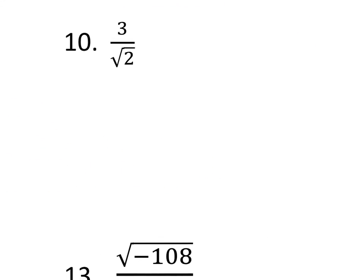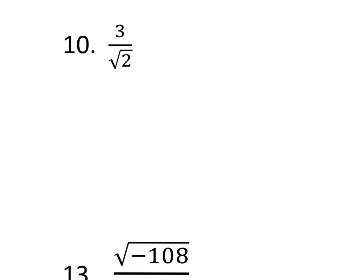And, lastly, number 10. Number 10 is all about rationalizing. This guy is too radical for school. He's too cool for school. Doesn't want to be in the bottom. Well, that's okay. I just need to be able to get him to the top. And, by doing that, I'm going to multiply by a fancy 1. Remember, this is just a fancy 1. So, it's √2 over √2. Well, let's just multiply. Fractions, we multiply straight across.